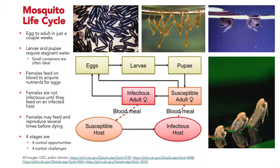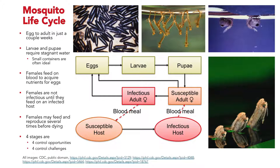All mosquitoes exhibit a four-stage lifecycle. Eggs — several hundred at a time — are laid on the surface of water or on moist soil. After a couple of days those eggs emerge into larvae, which swim around eating microorganisms and plant matter and breathe through little snorkels at the water's surface — which is why they need stagnant water. A good way to get rid of mosquitoes is to put a fountain in your pond or agitate the water surface. After a couple of days to weeks they turn into pupae, where they metamorphosize into adult mosquitoes. Pathogens are generally not transferred from mother to egg, so emerging adult mosquitoes are not yet infectious.